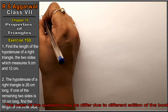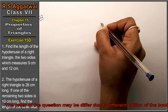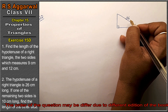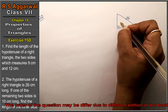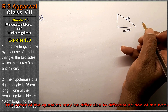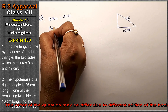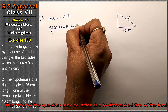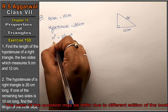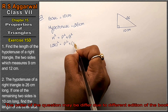Let's do question number two of exercise 15D, properties of triangle. Question number two: the hypotenuse of a right triangle is 26 cm. One of the remaining two sides — I consider this to be the base — is 10 cm. Find the length of the other side. We apply the same formula: H squared equals P squared plus B squared.